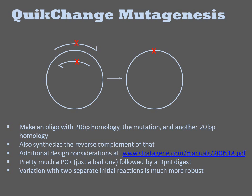This can be improved by doing a two-step procedure where first two parallel reactions are performed with just one of the two oligos in each reaction, and then the two reactions are combined for further rounds.